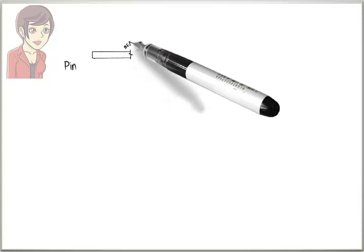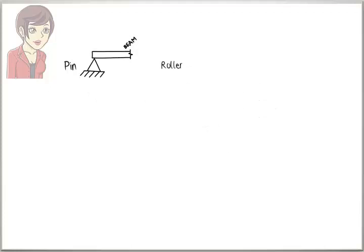Now, how do we analyze such a beam? Before we can answer the question, let's review reaction forces associated with each type of support. The three most common support types are pin, roller, and fixed supports.